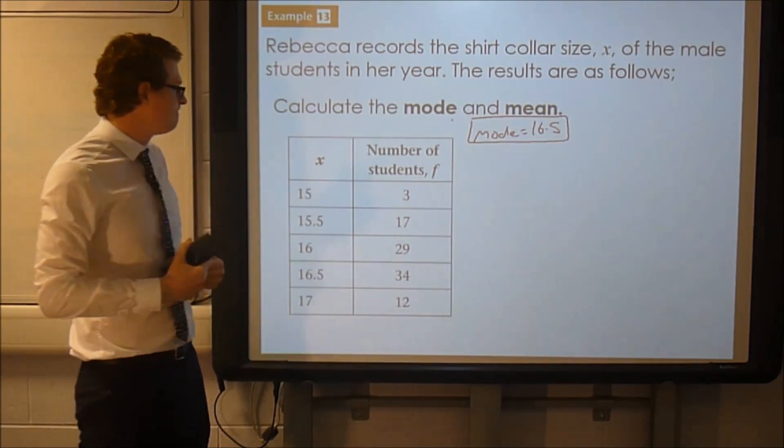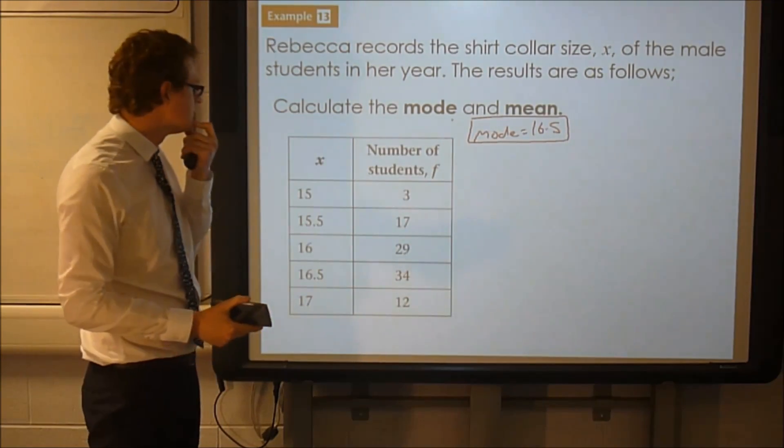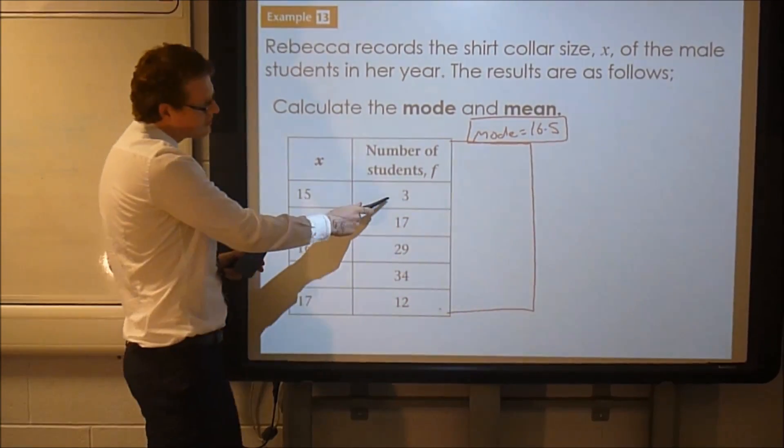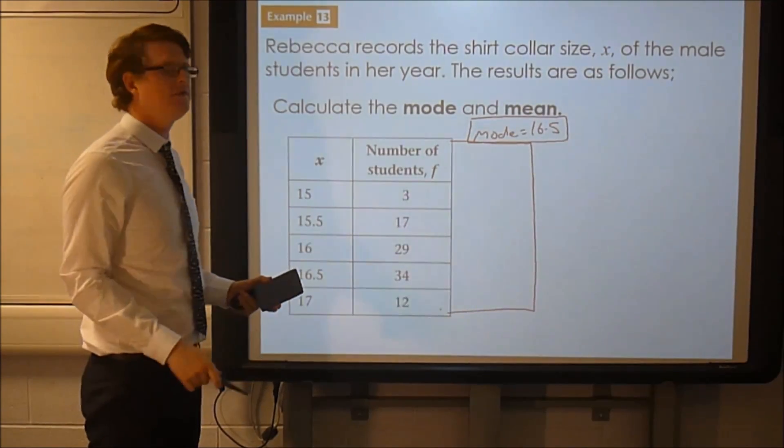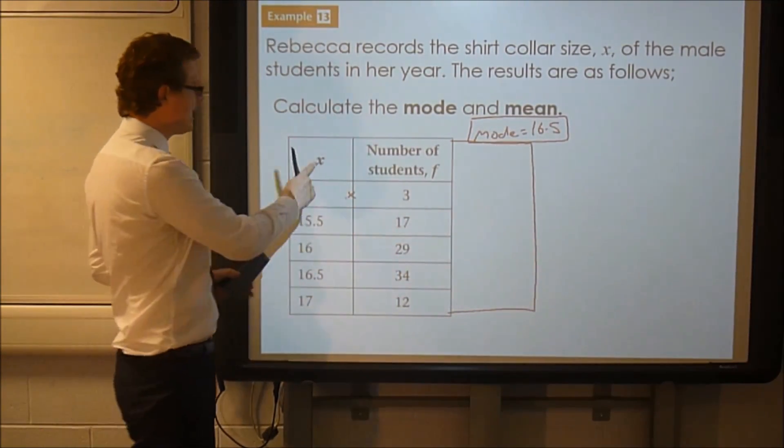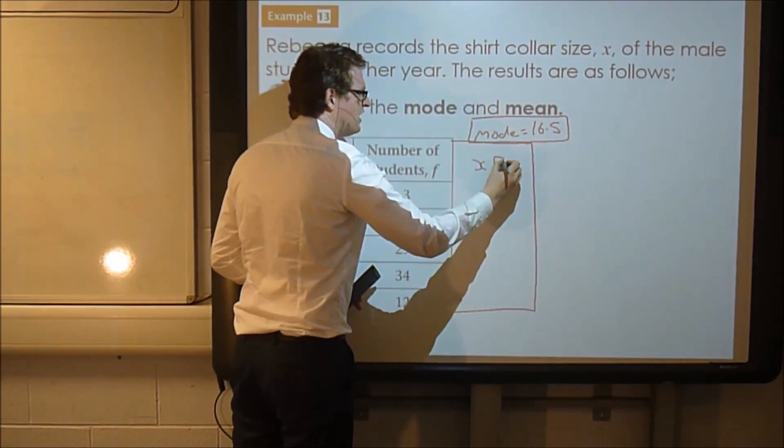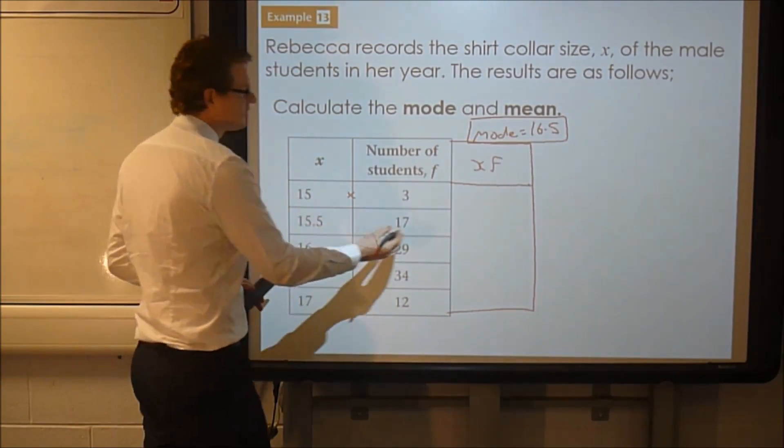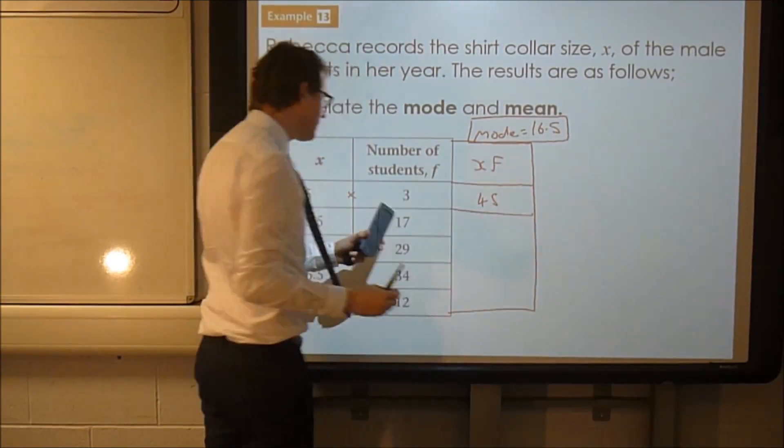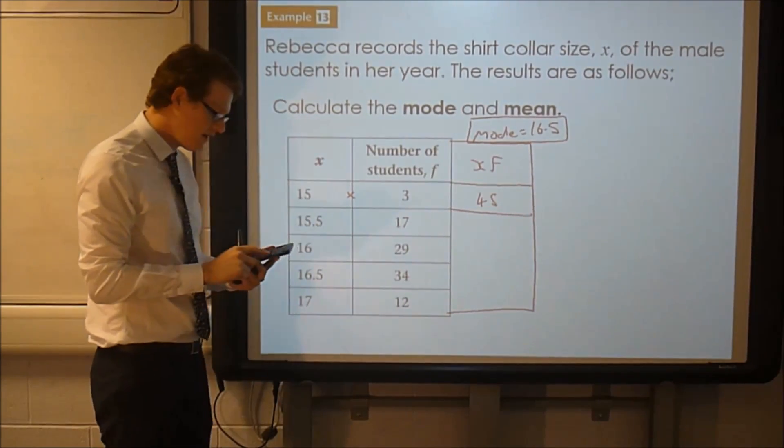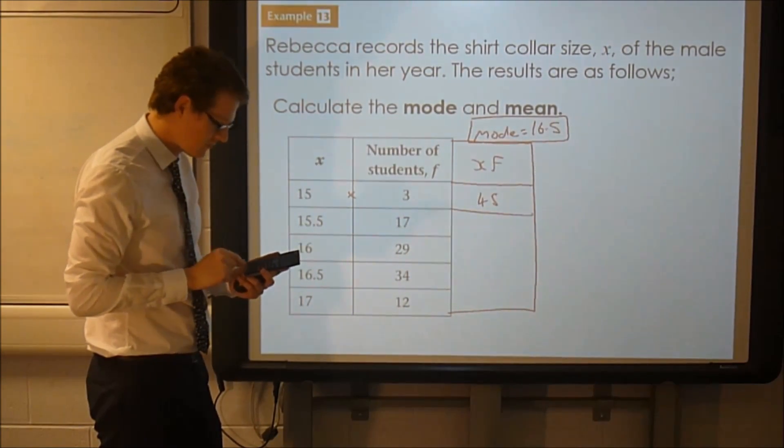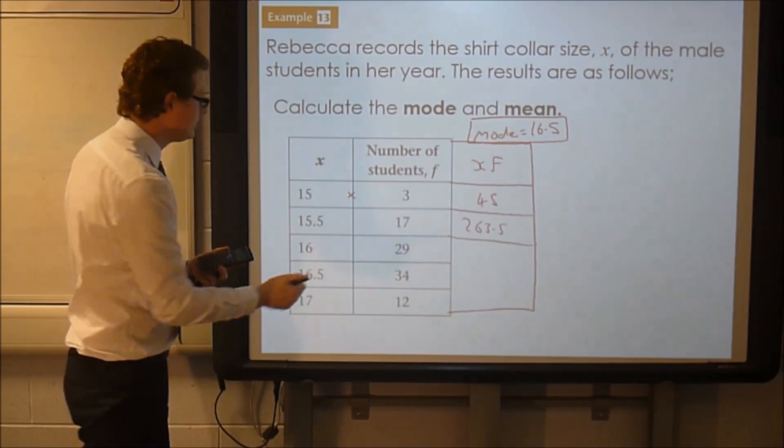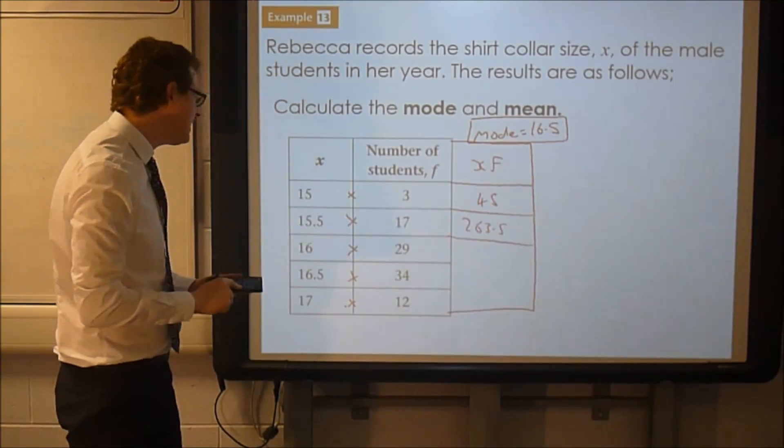Right, now looking at the mean. Mean, we add them up and divide by how many. I want to use another column. So if there was three people that's 15, if I was going to add up all those 15s, I could just do 15 times 3. So it's like doing the x times the f column. Oh that's what we'll call it, shall we? We'll call it the xf column. Or you could call it the fx column, it doesn't matter which way round. So that's going to give you 45. And this is where my calculator's going to come in handy, because if there was 17 and 15.5, I can't work that out in my head.